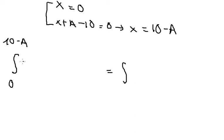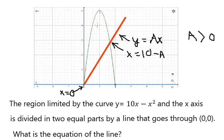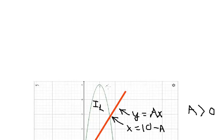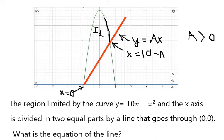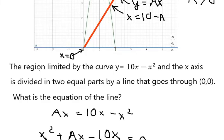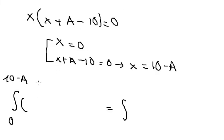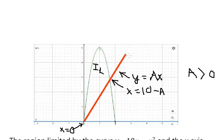The area of the first region, A₁, is the upper curve minus the lower line. The upper is the curve 10x minus x squared, and the lower is the red line Ax, integrated with respect to x.